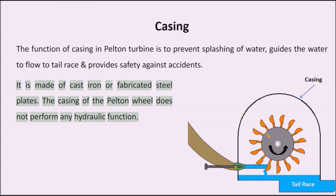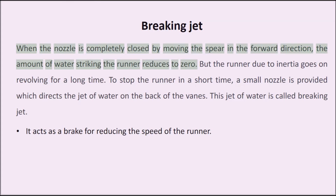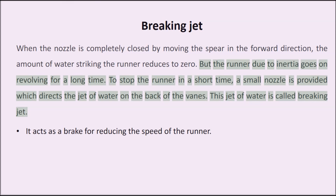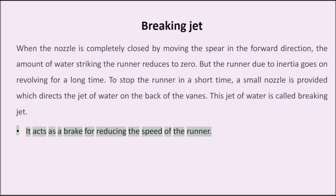Braking jet: When the nozzle is completely closed by moving the spear in the forward direction, the amount of water striking the runner reduces to zero, but the runner due to inertia goes on revolving for a long time. To stop the runner in a short time, a small nozzle is provided which directs a jet of water on the back of the vanes. This jet of water is called the braking jet and it acts as a brake for reducing the speed of the runner.